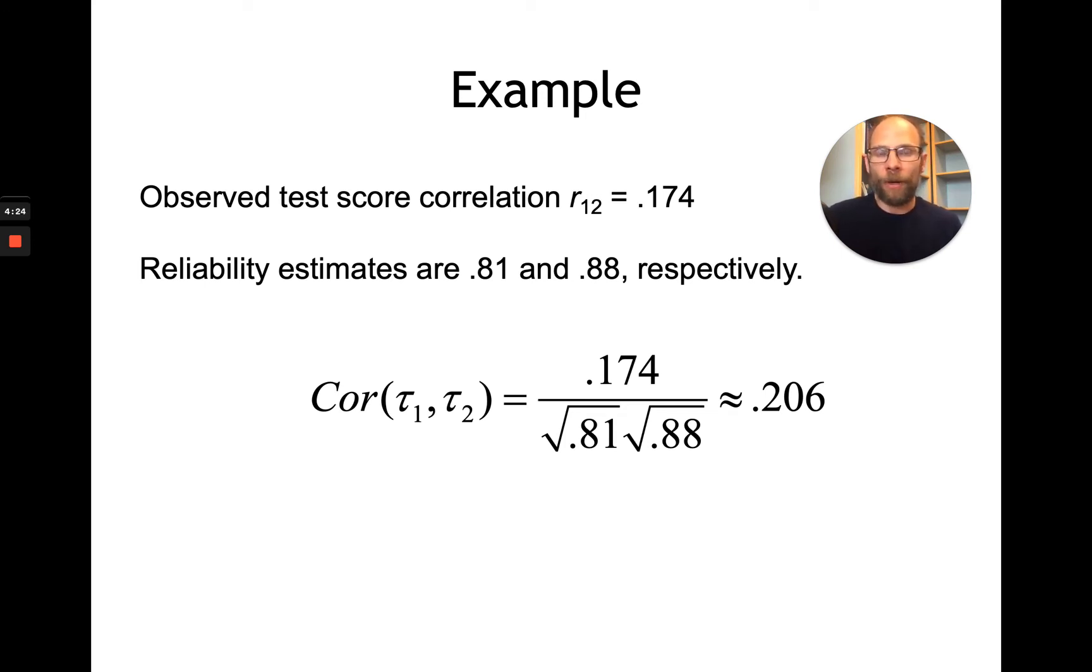Obviously, that's a big problem in many studies, because in many studies, we use observed correlations to estimate relationships between constructs. And so then we have to assume that those are underestimates. Now, the only situation where your observed correlation would be equal to your true score correlation would be if you had perfect reliabilities, meaning if you had ones here under the square root symbol. If both tests had perfect reliability of 1.0, then you would not need to make an adjustment, obviously, to the correlation.